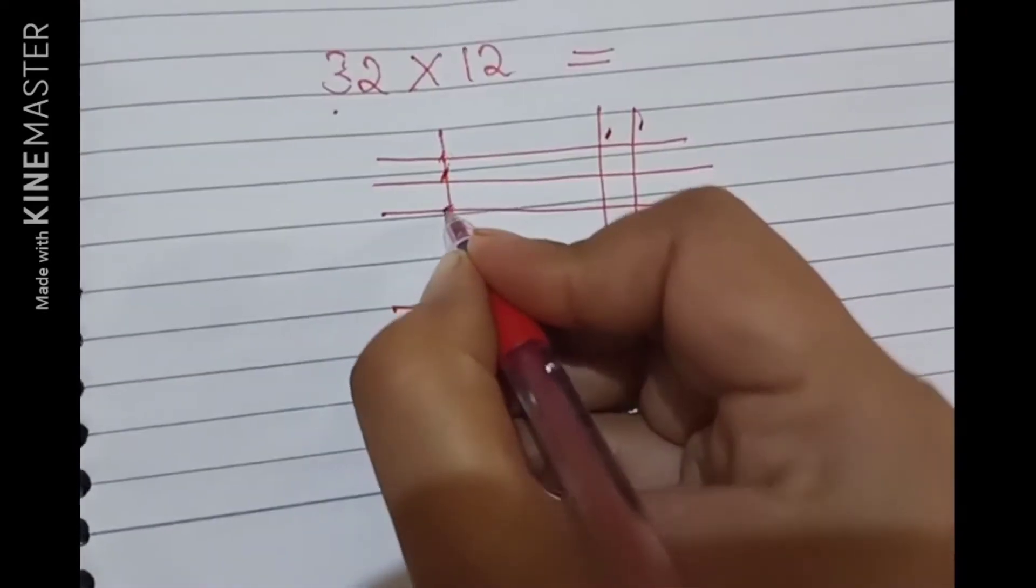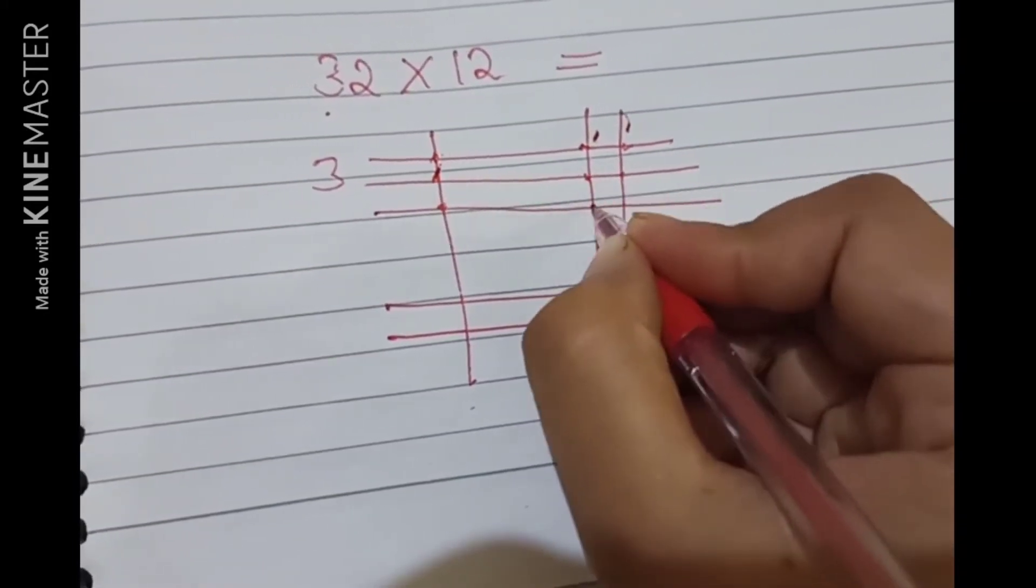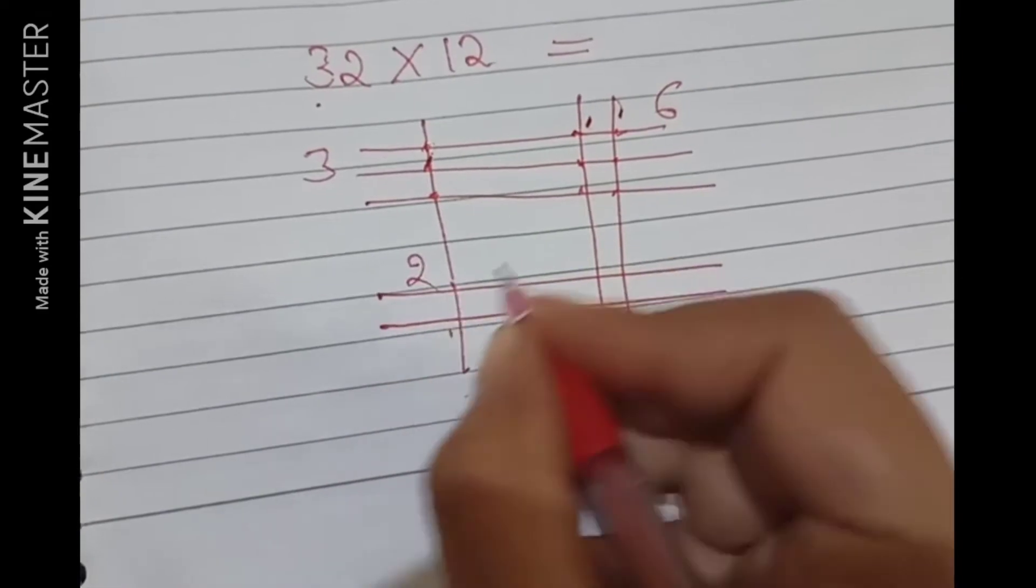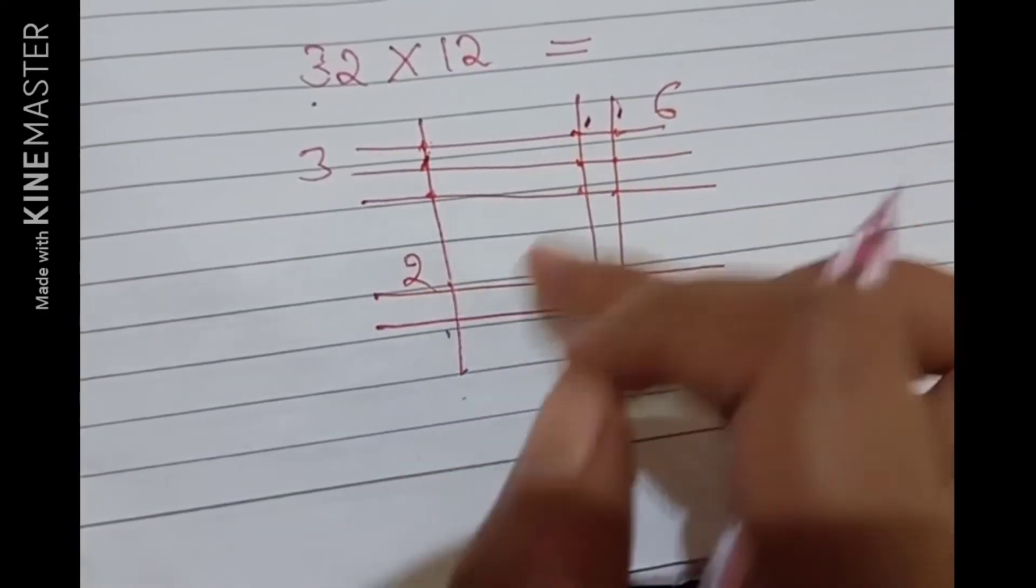We will count the points. We will count two points here. We will draw two points. How many points have we added here? So the amount of points is 1, 6, 7.